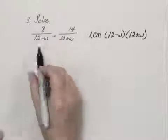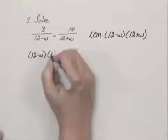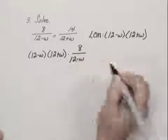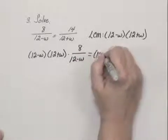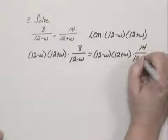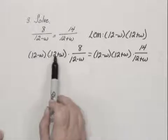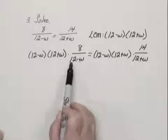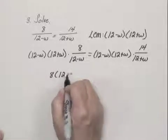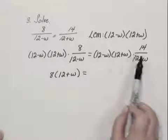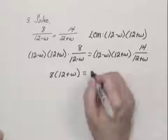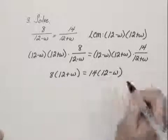So we multiply this by 12 minus w times 12 plus w. When we multiply and divide, the 12 minus w in the denominator and the 12 minus w in the numerator will cancel. And we'll be left with 8 times 12 plus w. And when we multiply on this side, the 12 plus w in the numerator will cancel the 12 plus w in the denominator. And we'll be left with 14 times 12 minus w.